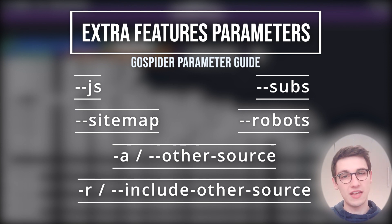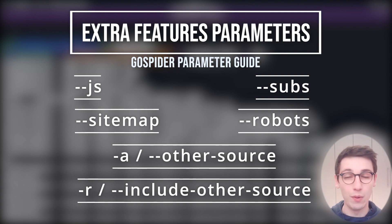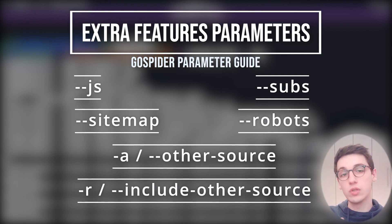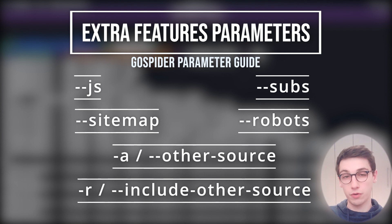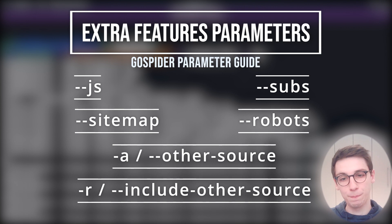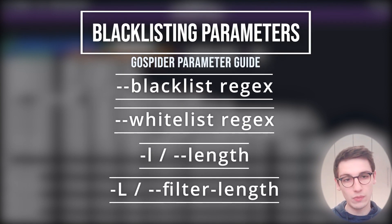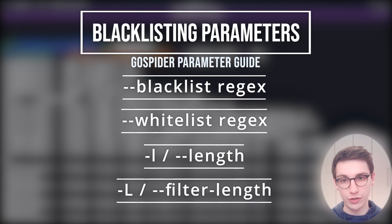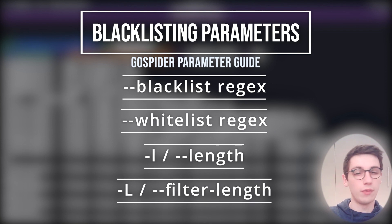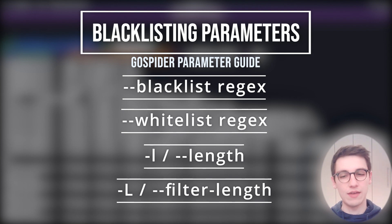You can also use "-r" or "--include-other-source", which will crawl those found web pages from archive.org or Common Crawl and keep crawling them so you know you've found everything. And since this generates a ton of output, we need a means of blacklisting. With "--blacklist" you can supply a regex and it will blacklist everything that matches.